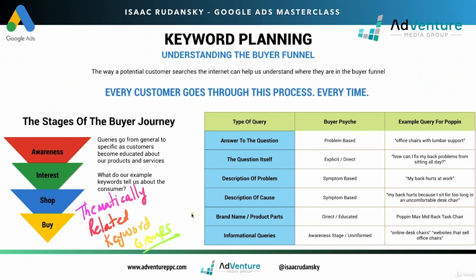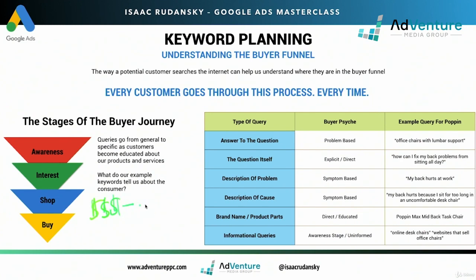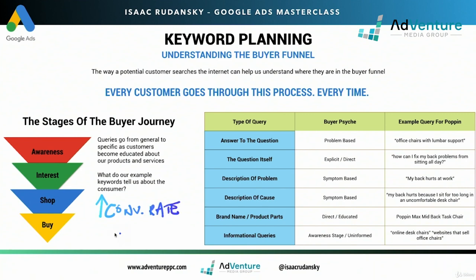Thematically related keyword groups — that's the whole idea here, that's what we're ultimately trying to accomplish. Another reason is that we want to bid more aggressively on better keywords that are more in the shop and interest stages of the funnel. The reason why we want to bid is because those keywords and search terms are going to generate traffic that has a higher conversion rate and usually a lower CPA — cost per acquisition, cost per conversion. Therefore, we want a good understanding of where our search terms fall into the different stages of the funnel.